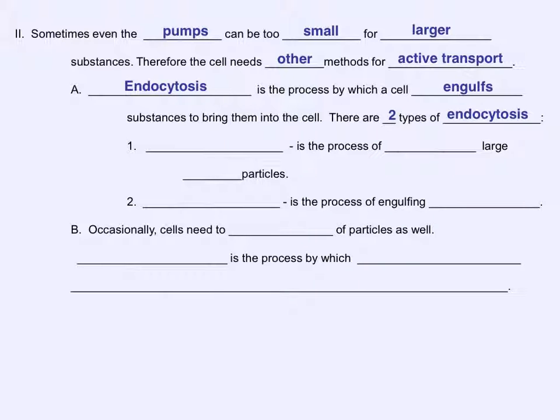A different method of active transport is called endocytosis. Please say that to yourself, endocytosis. Endocytosis is the process by which a cell engulfs substances to bring them into the cell. And there are two different types of endocytosis processes. One type of endocytosis is called phagocytosis. This is the process of engulfing solid particles, like the cell eating something solid.